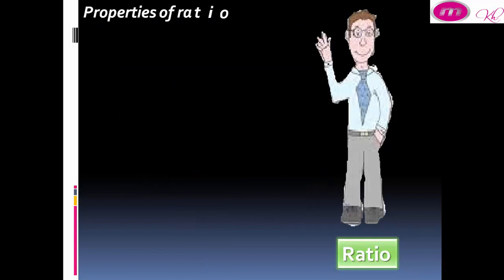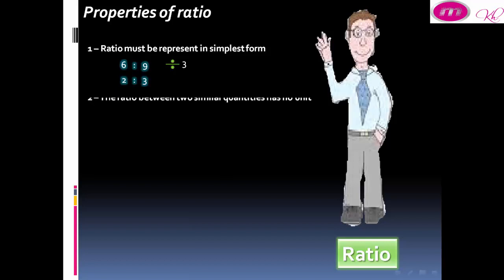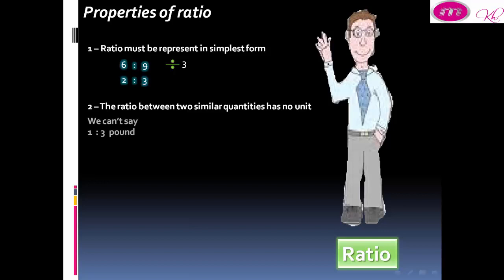Ratio must be represented in simplest form. For example, 6 to 9 divided by 3 equals 2 to 3. The ratio between two similar quantities has no unit. We cannot say 1 to 3 power.